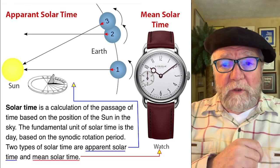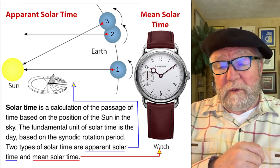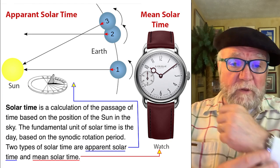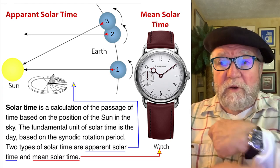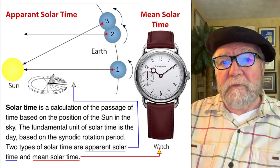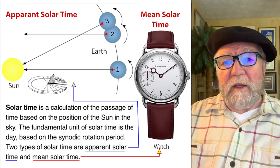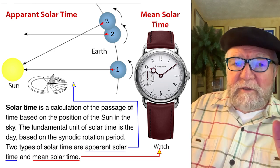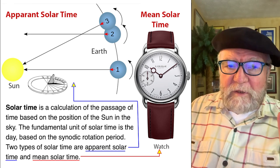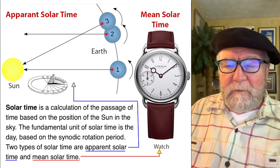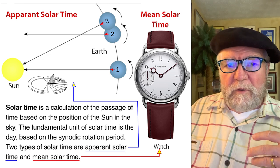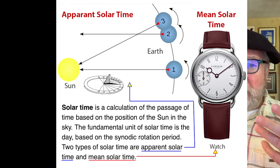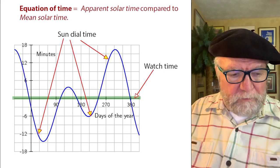The fundamental unit of solar time is the day, based on the synodic rotation period — this is what we were showing with the earth going around. The two types of solar time are the apparent, which is what you can see on your sundial, and mean solar time, which is what you see on your watch. The equation of time refers to this difference between the two.